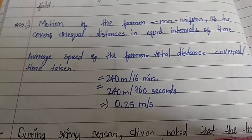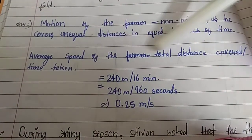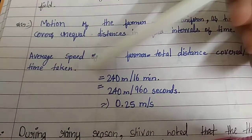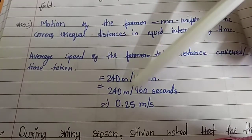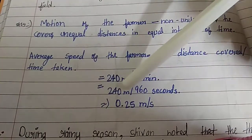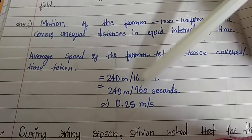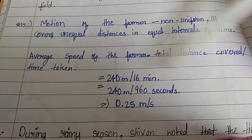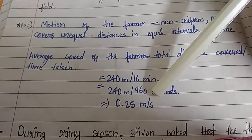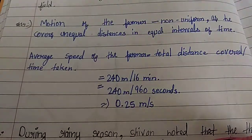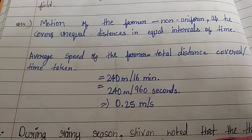Find the average speed over one complete round of the field. Average speed of the farmer equals total distance covered divided by time taken: 240 meters upon 16 minutes equals 240 upon 960 seconds. When we convert minute to seconds, the answer is 0.25 meters per second.